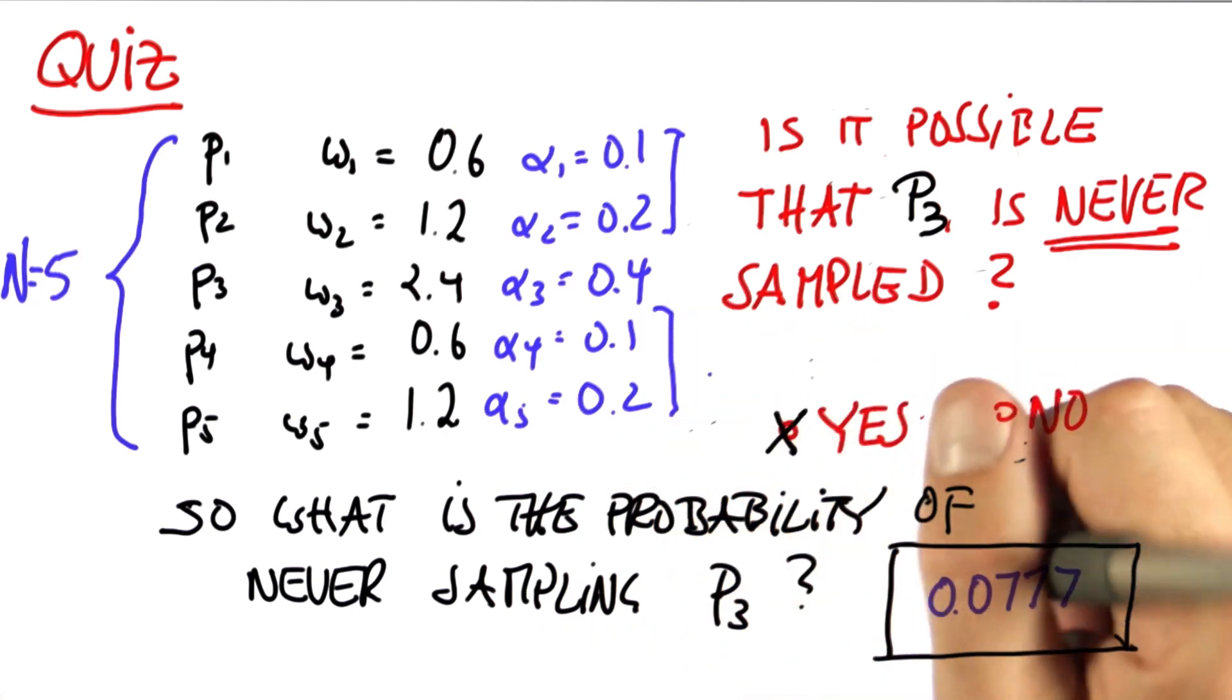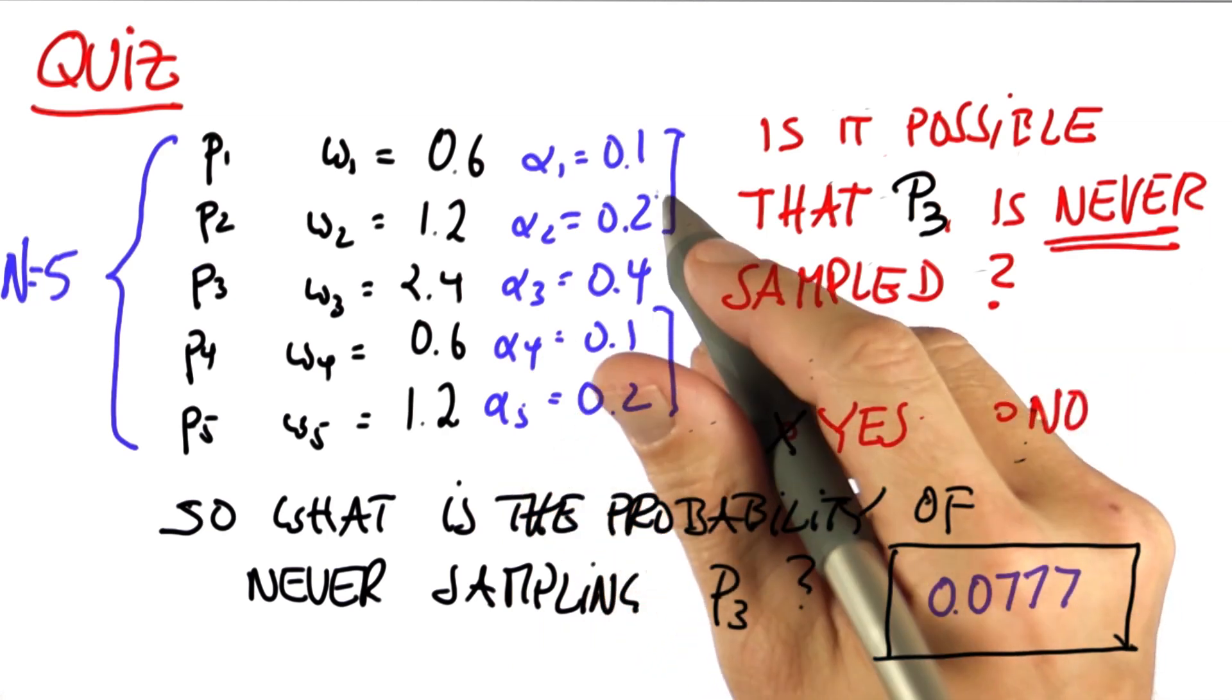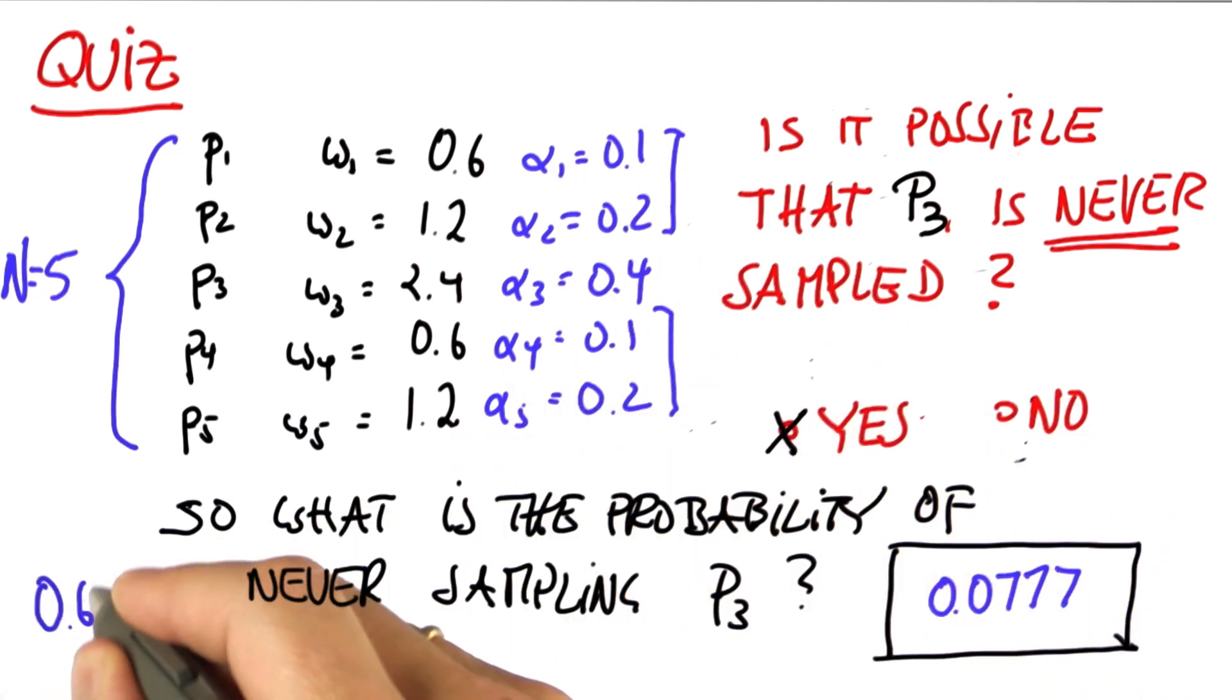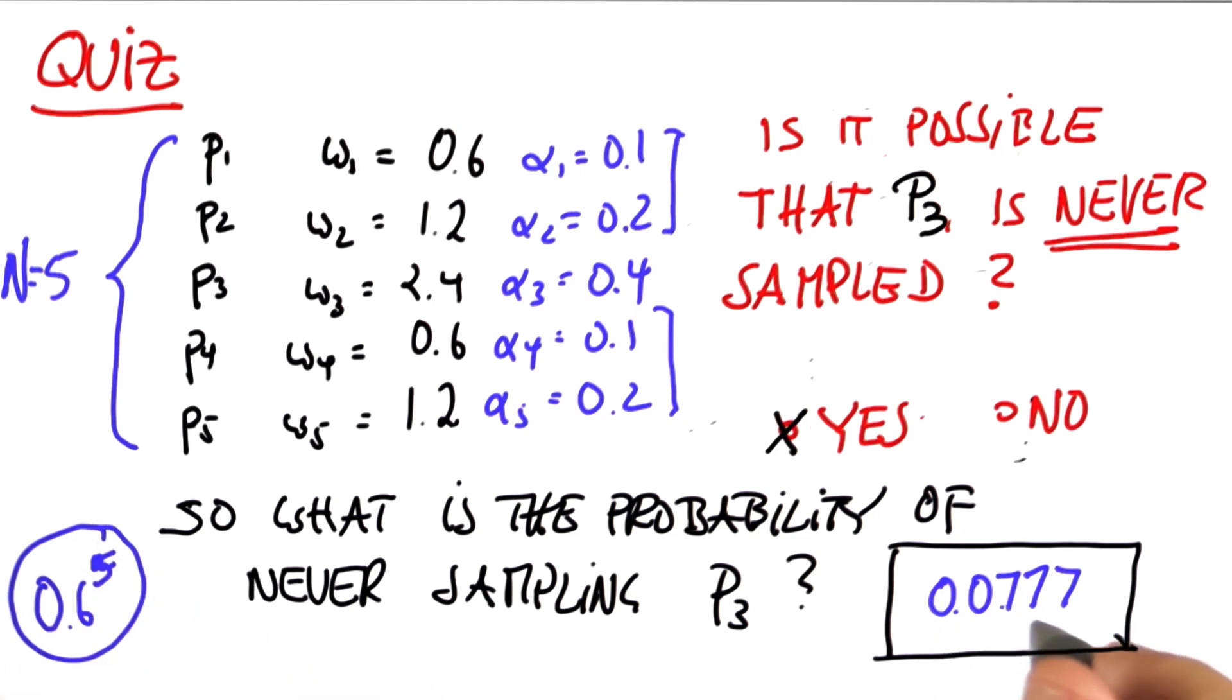So for five independent samplings to draw one of those four, we get a total probability of 0.6 to the fifth, which is approximately 0.0777.